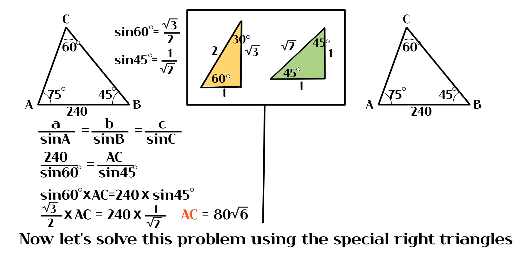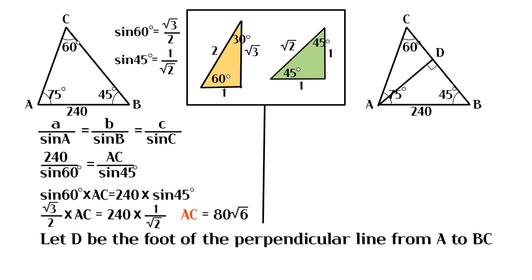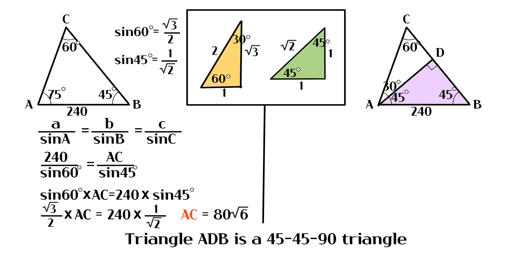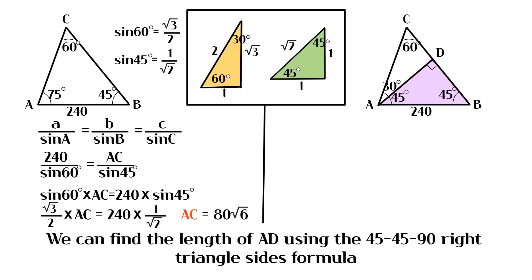Now let's solve this problem using the special right triangles. Let D be the foot of the perpendicular line from A to BC. Triangle ADB is a 45-45-90 triangle. We can find the length of AD using the 45-45-90 right triangle sides formula.